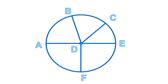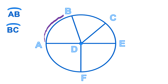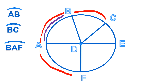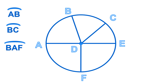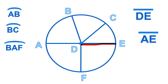Let's have an example with circle D. Arc AB is located here. Arc BC is from point B to C. Arc BAF — those are examples of how we write arcs. Next, line segment DE goes from the center to this point, so that's a radius. Line segment AE is from this point to this point — that's a diameter.